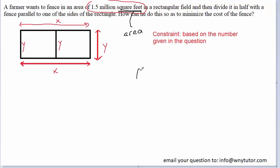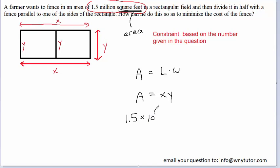The area of a rectangle is given by the equation length times width. As indicated in our drawing, the length of our rectangle is x and the width is y. We recall that the question constrains the problem to have an area of 1.5 million square feet, so we can plug in 1.5 million — it's more convenient to write that in scientific notation as 1.5 times 10 to the power of 6 — and that equals x times y.